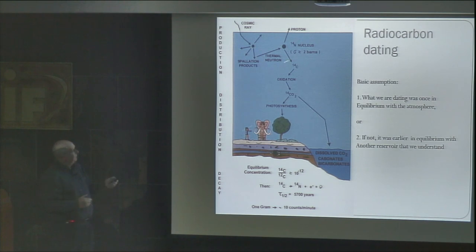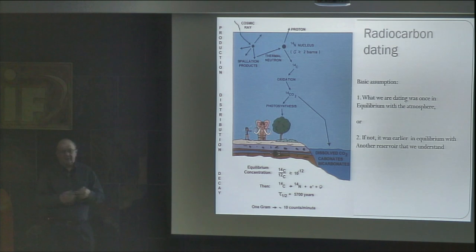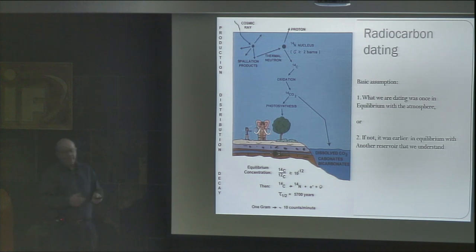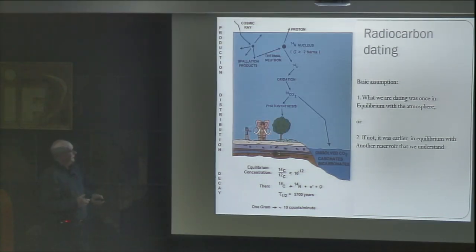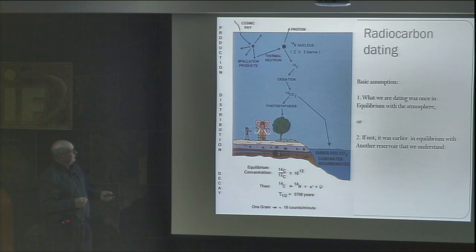But if you're removed from this system — that is, you die — then this equilibrium level will decay. The carbon-14 production rate in the atmosphere is not constant; it varies with time. So we have to worry about that when we calculate true ages as opposed to radiocarbon ages.